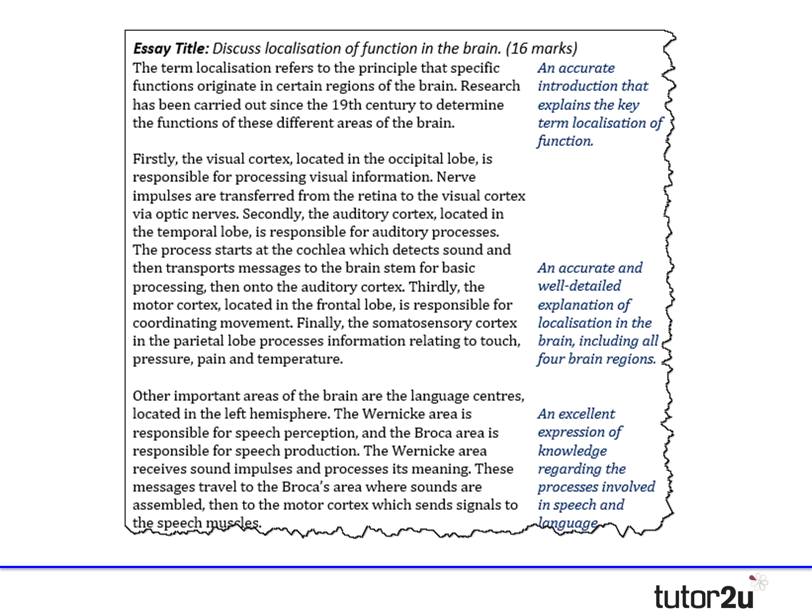Here's the knowledge section: localisation refers to the principle that specific functions originate in certain regions of the brain, with research carried out since the 19th century to determine these functions. The visual cortex in the occipital lobe processes visual information via the optic nerves. The auditory cortex in the temporal lobe handles auditory processing, starting at the cochlea before messages travel to the brainstem and then the auditory cortex. The motor cortex in the frontal lobe coordinates movement, and the somatosensory cortex in the parietal lobe processes touch, pressure, pain, and temperature.